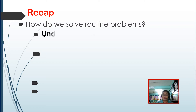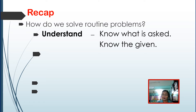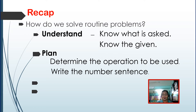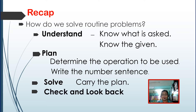In solving routine problems, you have to follow four steps. The first one is Understand — you have to know what is asked and know what the given information is. The next one is Plan — determine the operation to be used and write the number sentence. The third is Solve — apply the operation in the number sentence. The last one is Check and Look Back — double check if the answer is correct.